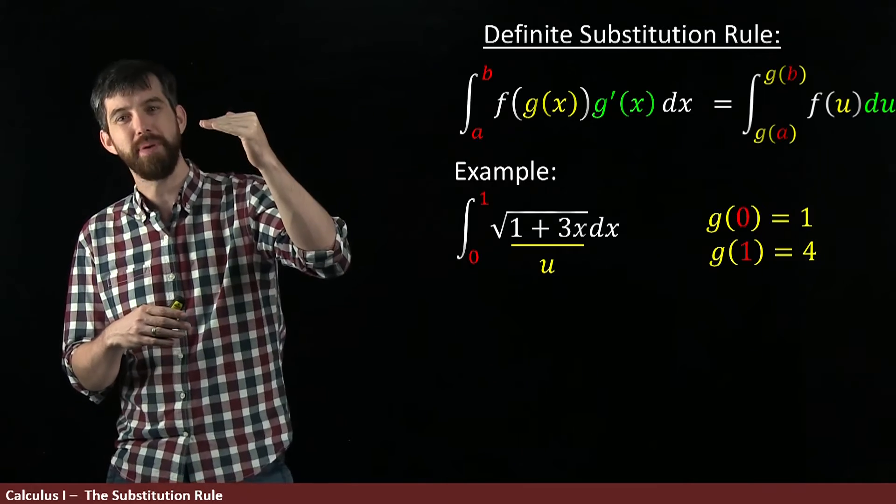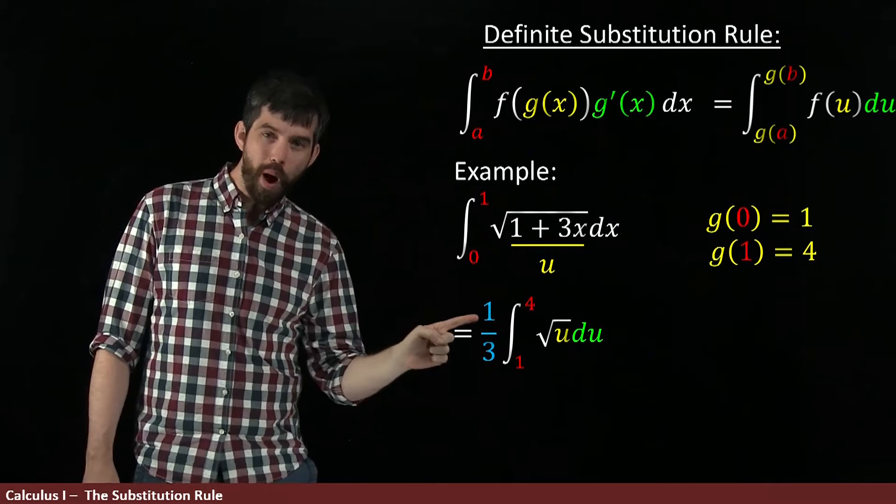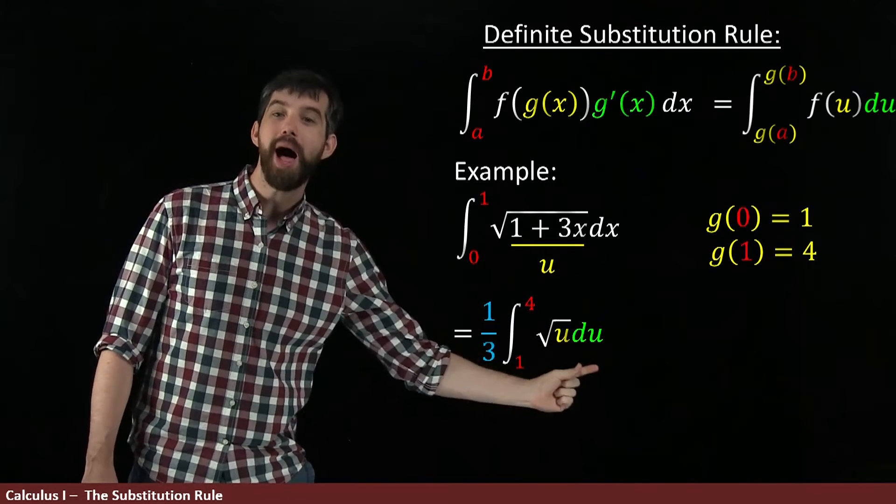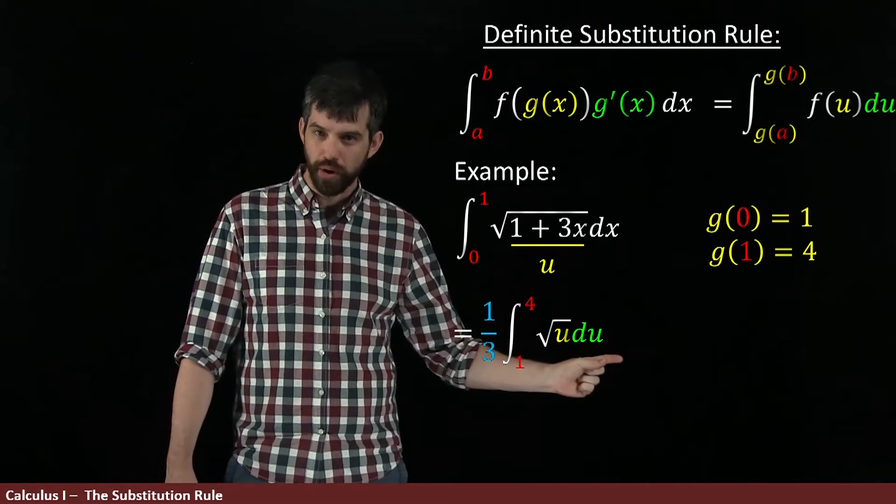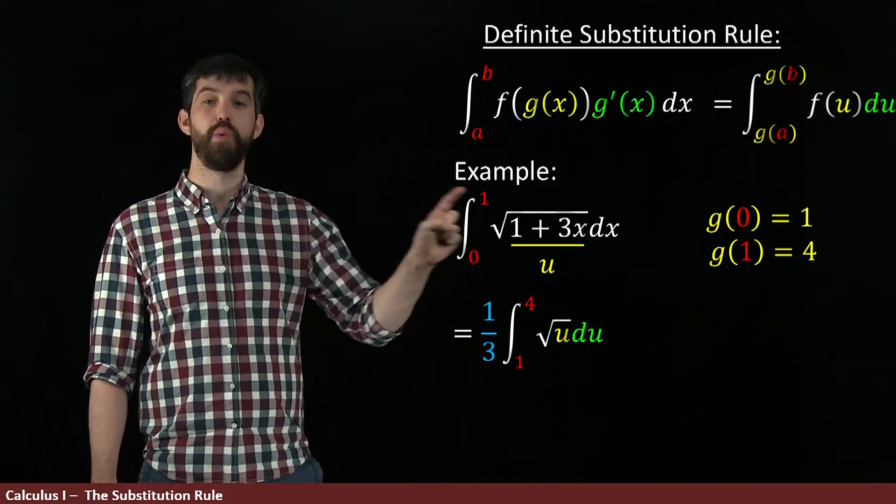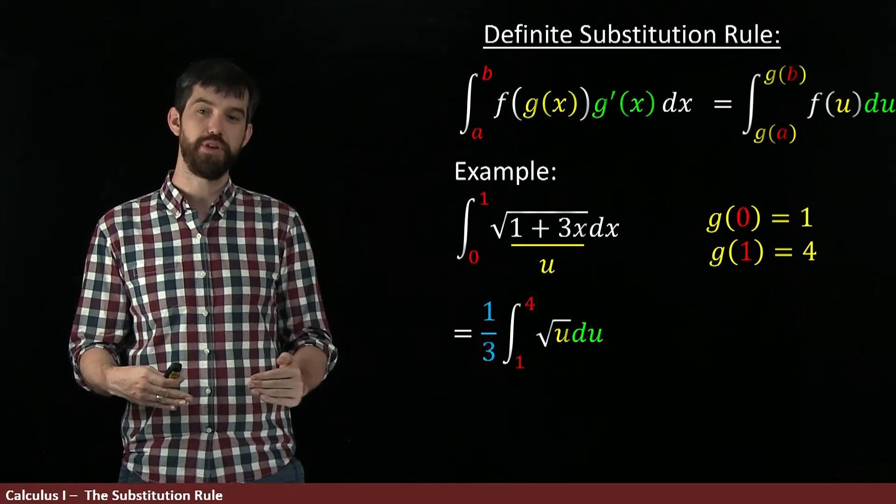I'm going to multiply the top and multiply the bottom by 3. And what this is going to give me is 1 third. And then the 3 dx combines into being a du. So it's 1 third du square root of u. We know that part. And the 1 and 4 is what the 0 and 1 have changed to when I've exchanged it from expressing in terms of x to expressing it in terms of u.